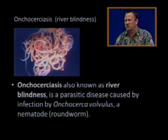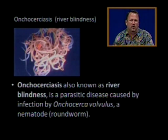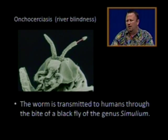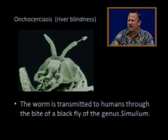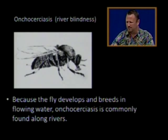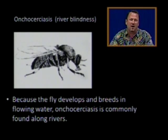Onchocerciasis, also known as river blindness, is a parasitic disease caused by infection with Onchocerca volvulus — a nematode, a roundworm. The worm is transmitted to humans through the bite of a black fly of the genus Simuleum. Because the fly develops and breeds in flowing water, onchocerciasis is commonly found along rivers.